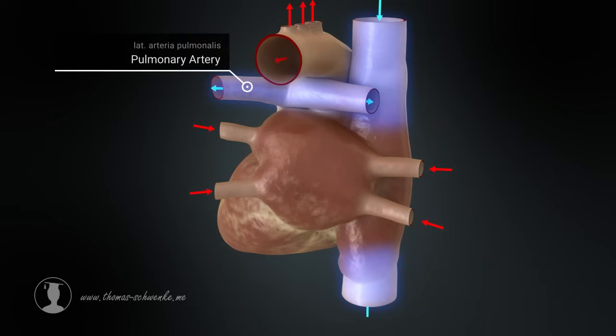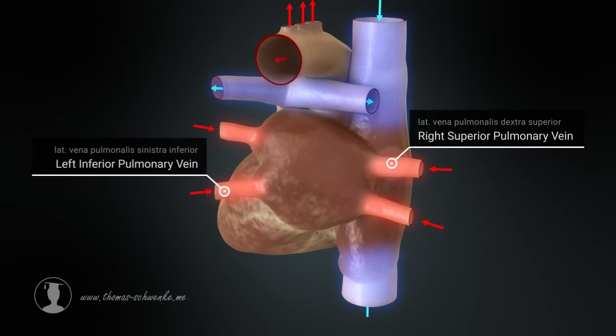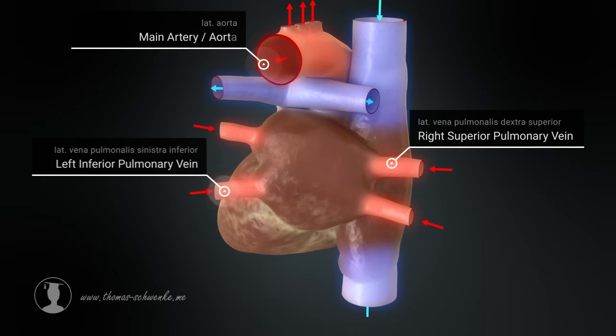The oxygenated blood from the lungs returns to the heart through the four pulmonary veins. The heart then pumps this blood into the body by the aorta.